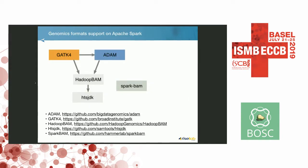In terms of doing genomics on Apache Spark, both the ADAM project, which has been presented at BOSC in years prior, and the Spark version of GATK4, both have shared dependencies. We both rely on the HTS JDK for low-level BAM, CRAM, SAM, and VCF codecs, and then a library called Hadoop BAM, which provides distributed and parallel access to those flat file formats when you're on a distributed file system such as HDFS.